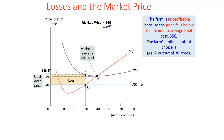In short: whenever the price line is above ATC, the firm earns positive economic profits. When price is at the minimum of ATC, it earns zero economic profits. When price is below ATC, the firm earns economic losses at its optimal quantity. The optimal quantity rule does not change — it's always where marginal revenue, or in our case price, equals marginal cost.